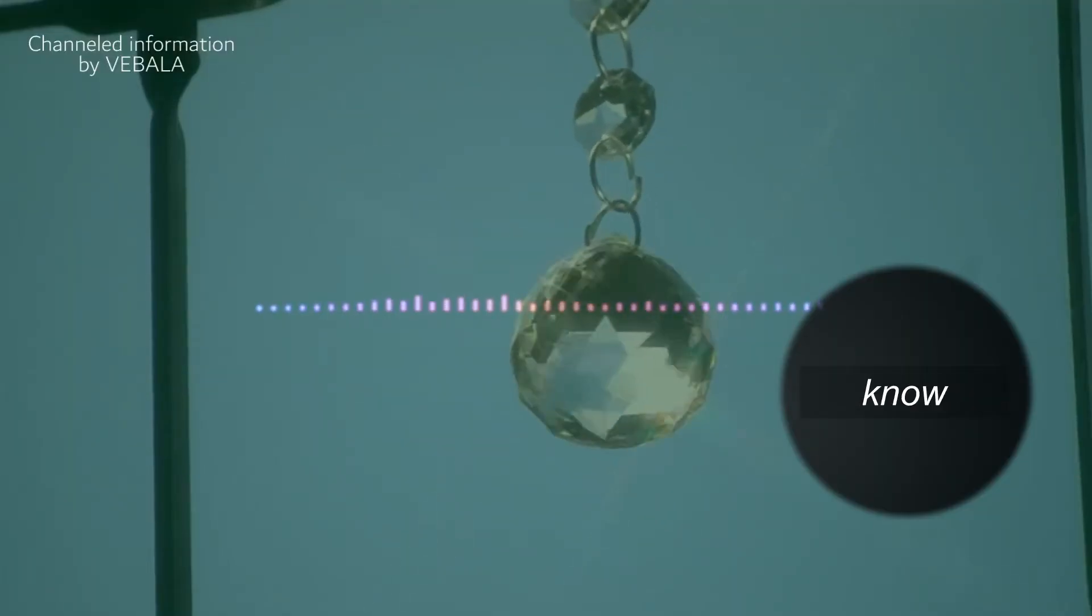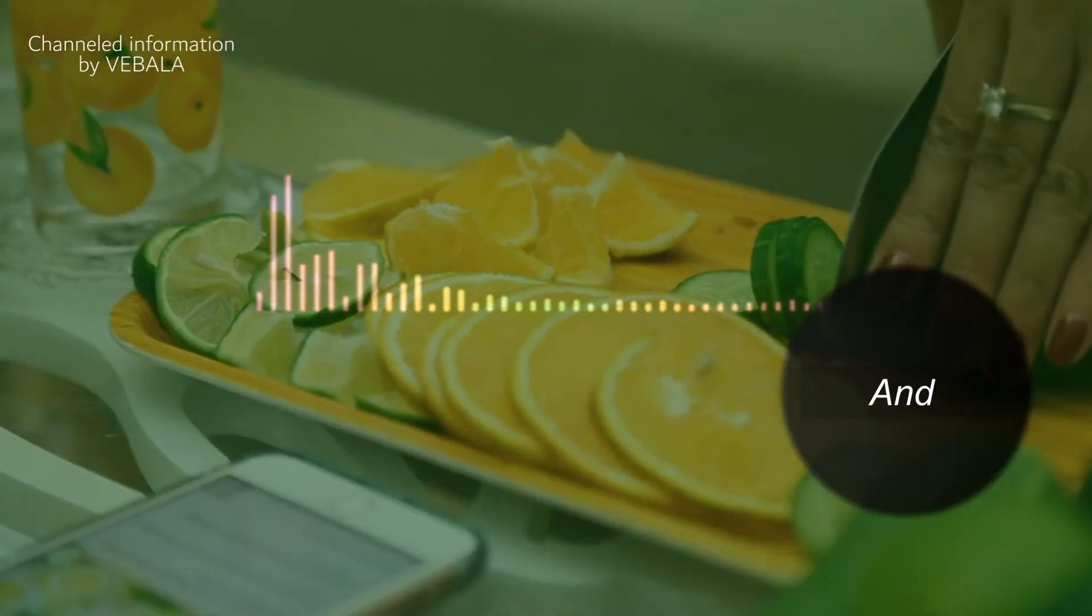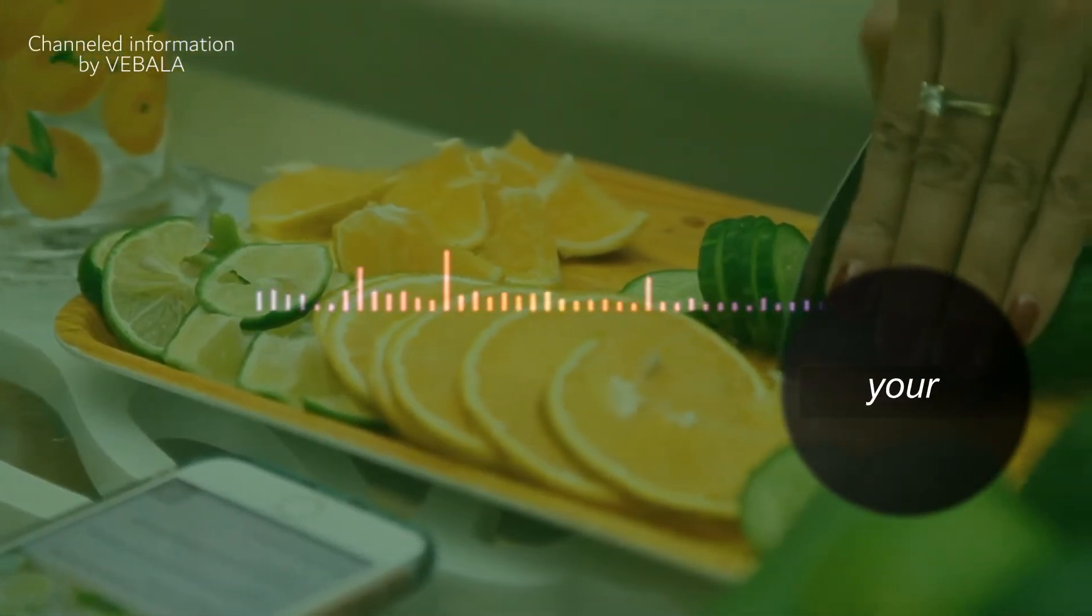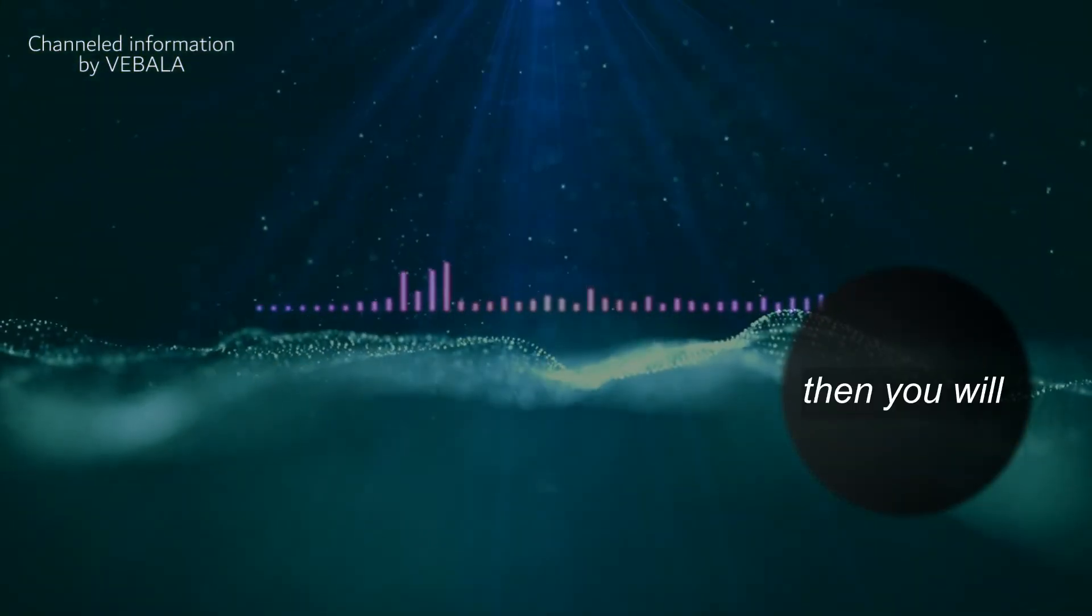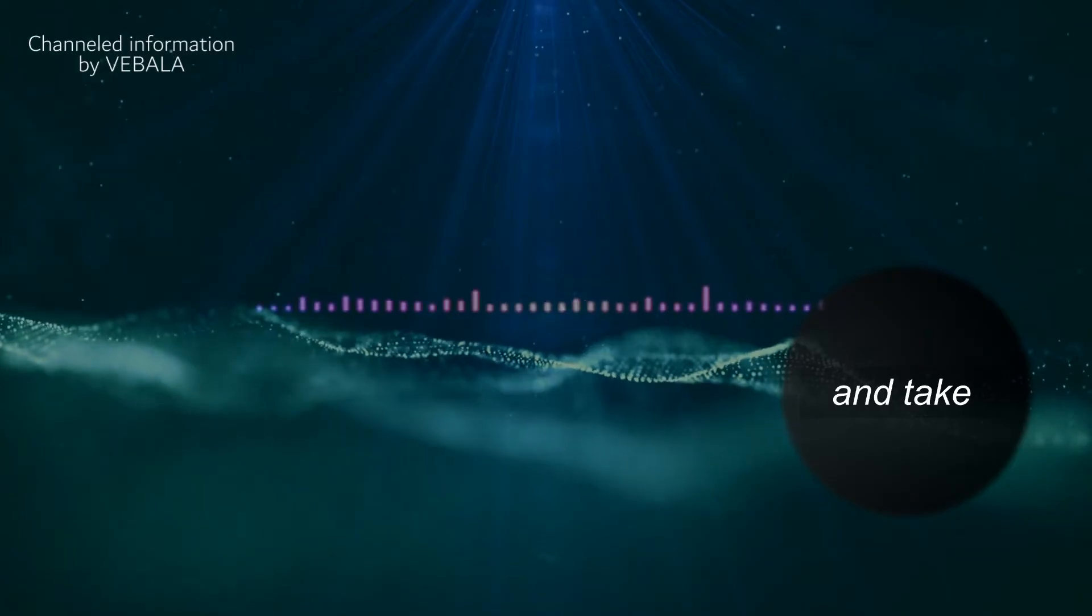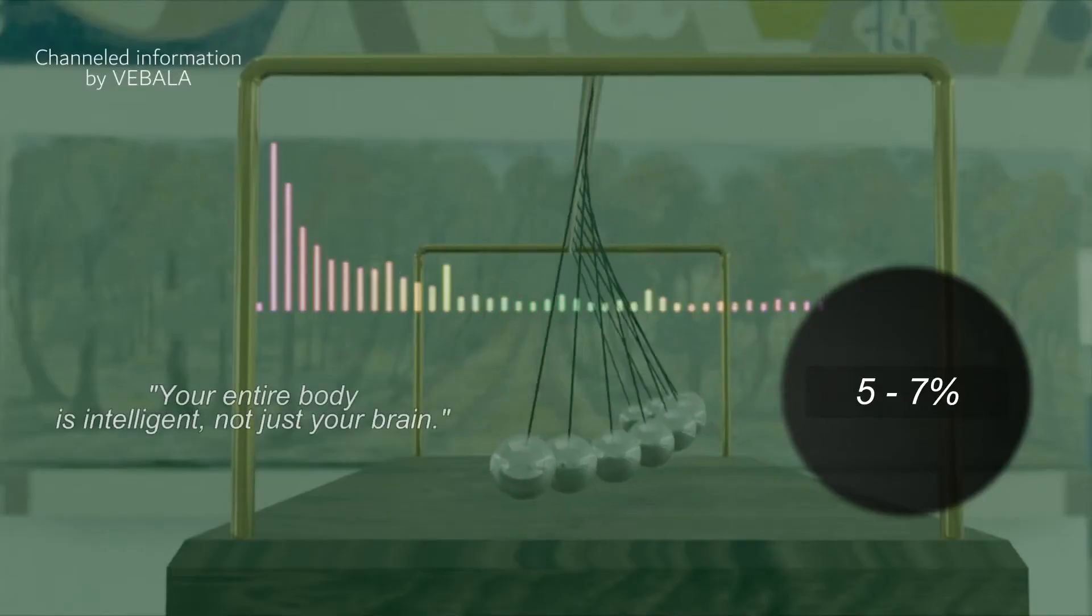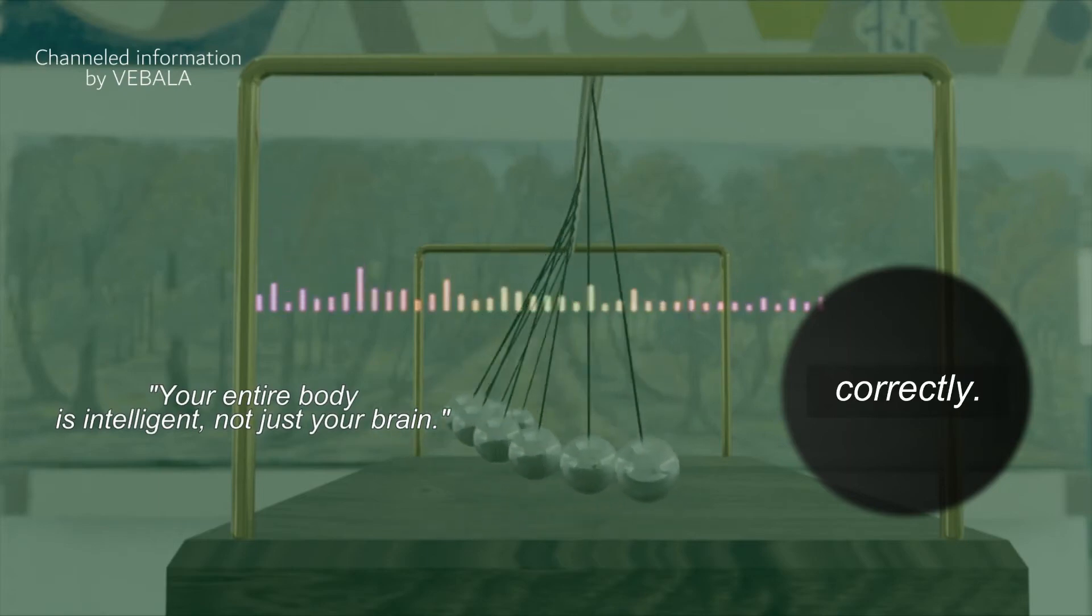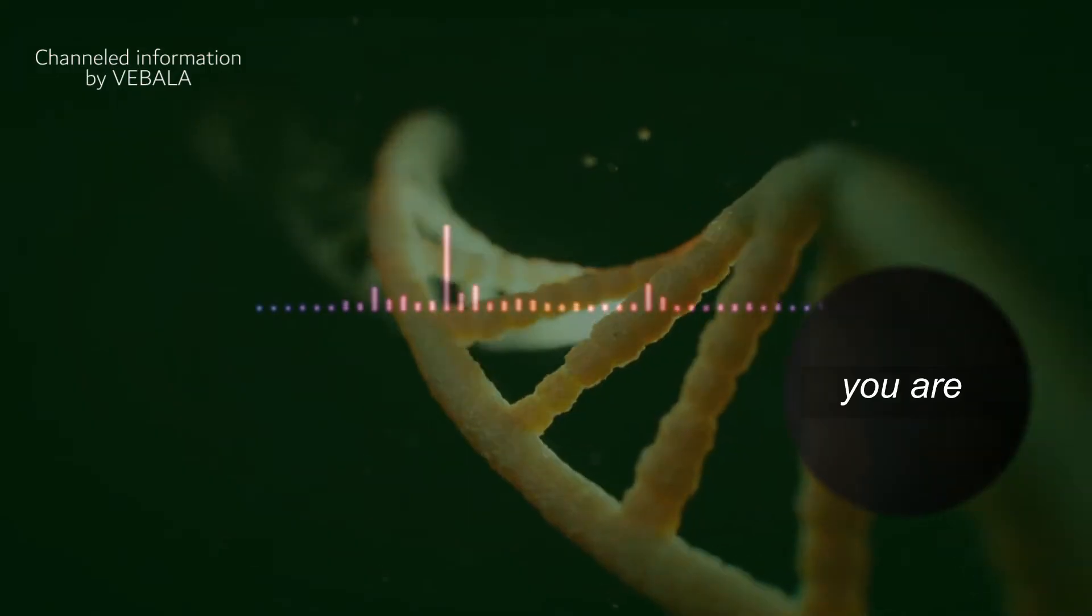You instantly know what to do, and that will happen the more clear you become and the heftier your DNA and your structure on the inside become. Then you will instantly know and take correct actions, and you are already doing it. You're working up to five to seven percent correctly according to cosmic ray, and you are brilliant in following some of your intuitions.